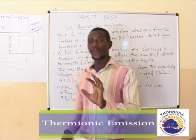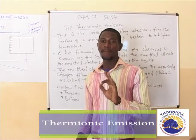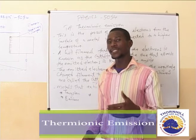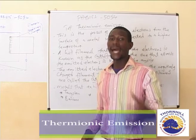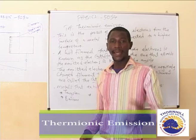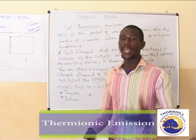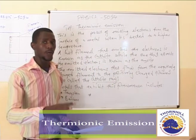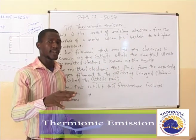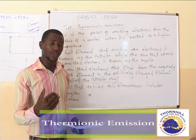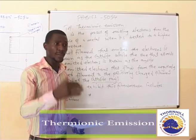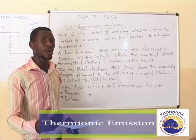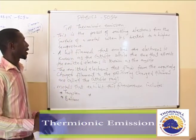The same thing happens with metals. Metals usually have electrons that are delocalized. When these delocalized electrons in a metal are heated to a higher temperature, they tend to gain more kinetic energy and therefore escape the surface of the metal. That process — which allows electrons to escape the surface of a metal after heating — is what we simply call thermionic emission.